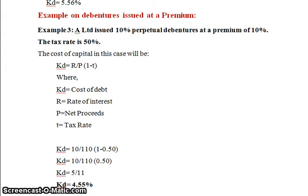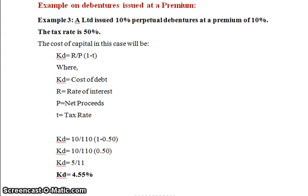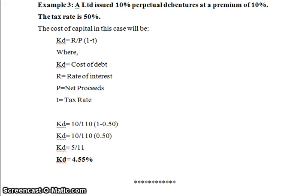Example 3: A Limited issued 10 percent perpetual debentures at a premium of 10 percent, so net proceeds are 110 rupees. The tax rate is 50 percent. Using KD = R ÷ P × (1 − T): KD = 10 ÷ 110 × (1 − 0.50) = 10 ÷ 110 × 0.50 = 5 ÷ 110, so KD equals 4.55 percent. Thank you.